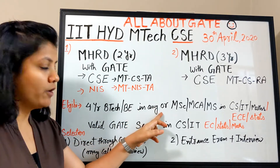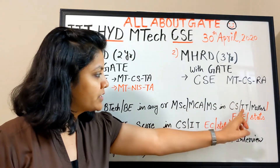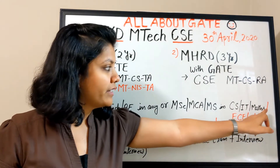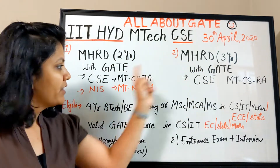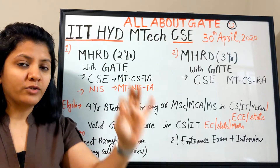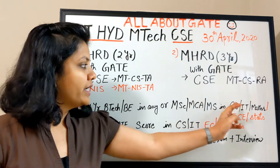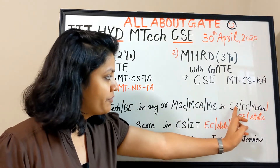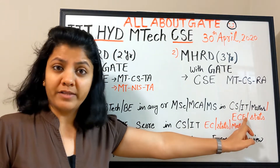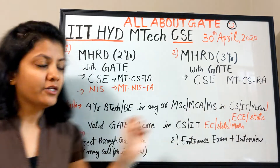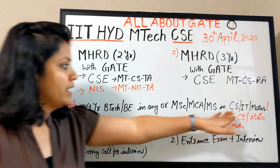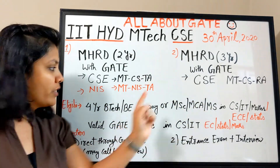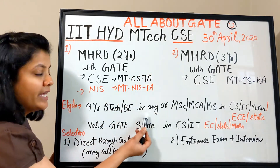The eligibility criteria: a four-year BTech or BE in any engineering discipline, or MSc, MCA, or MS in computer science, IT, or mathematics. What I'm describing in black applies to the CS MTech programs — either two-year or three-year — where the MSc/MCA/MS background must be in CS, IT, or mathematics. For the NIS program, electronics and statistics backgrounds are additionally eligible.